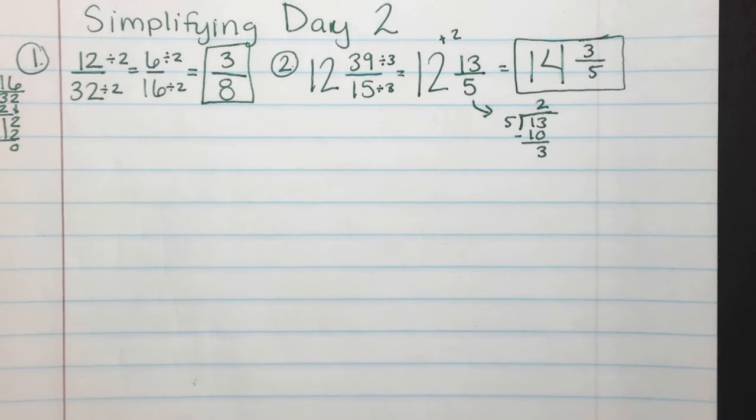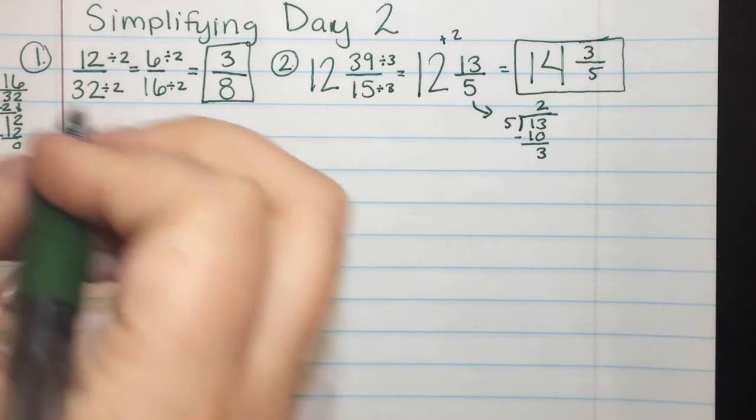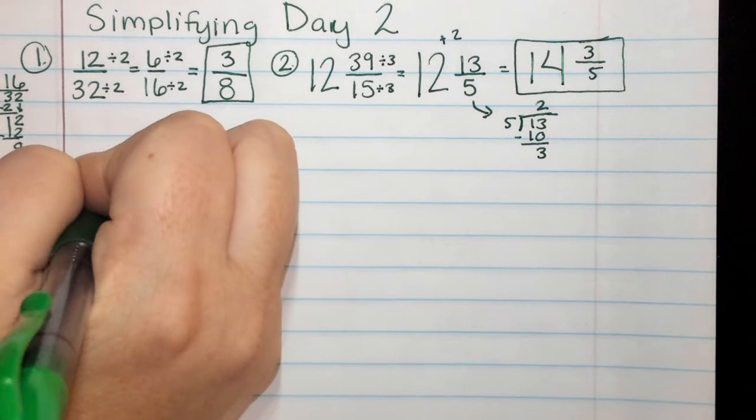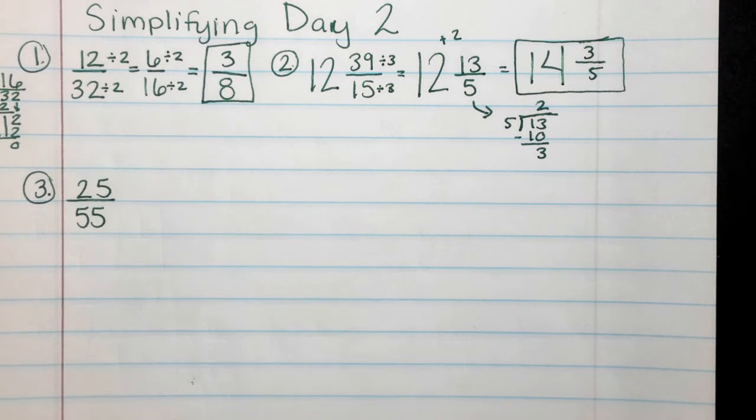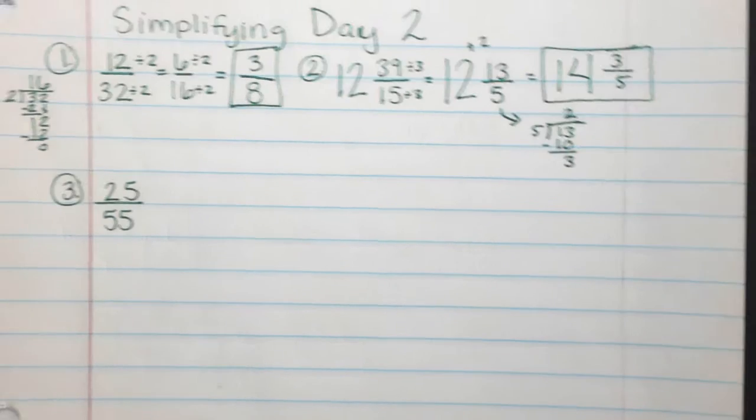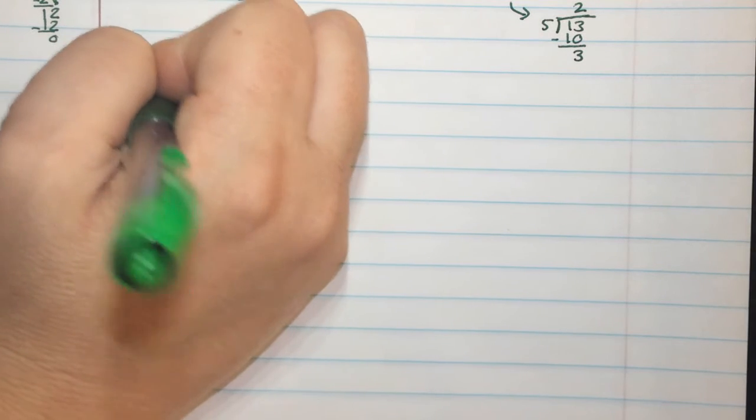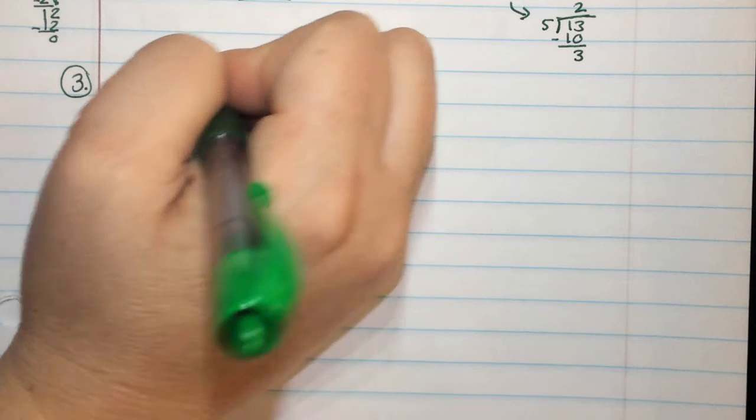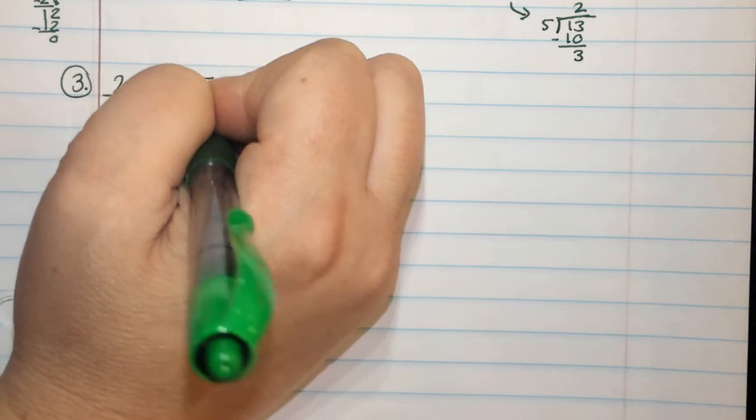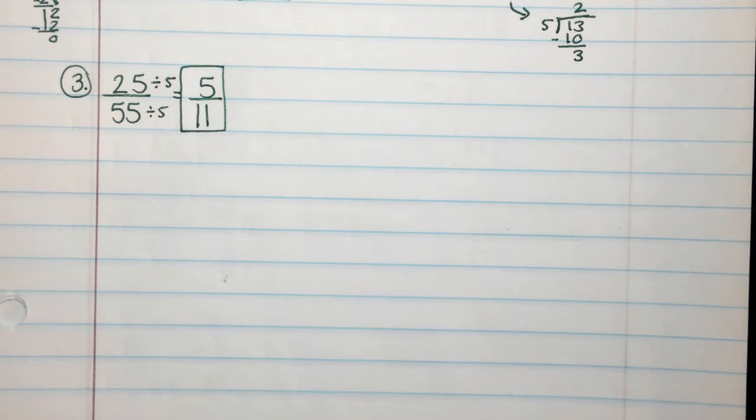Let's look at number three. I'm going to skip some lines just so that I don't get in the way of my other work. 25 over 55. What can I do to simplify this problem? RJ? Divide by five. 25 divided by five is five. 55 divided by five is 11. So I get 5 over 11.